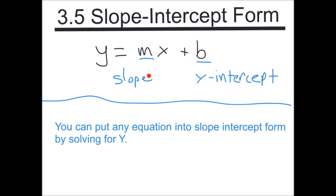Sometimes they try to trick you and write these in opposite orders — it doesn't matter, it's the same thing. Slope is the number with x, y-intercept is the number without.